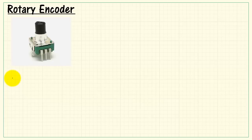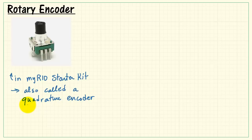Here's the rotary encoder that is included in the MyRio starter kit. This rotary encoder is also commonly referred to as a quadrature encoder. We'll get into the meaning of that word quadrature here in a little bit.